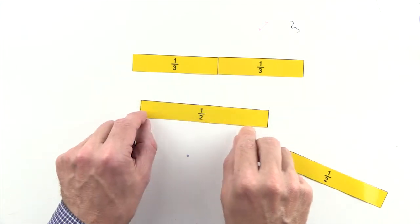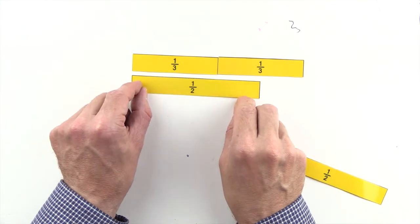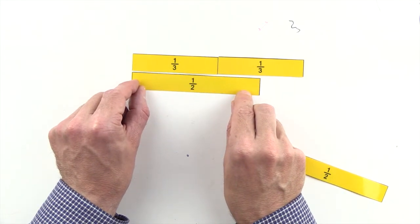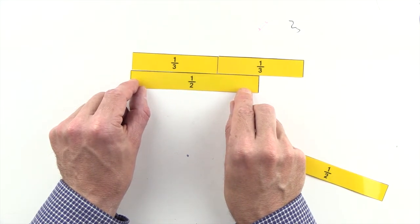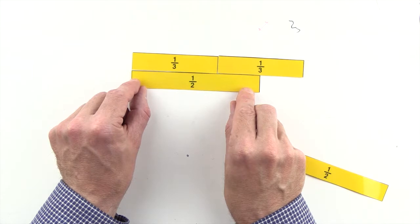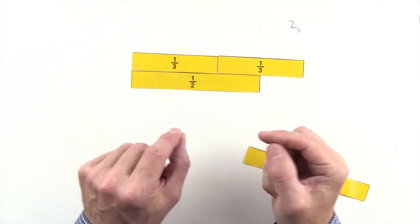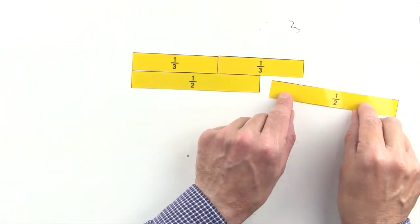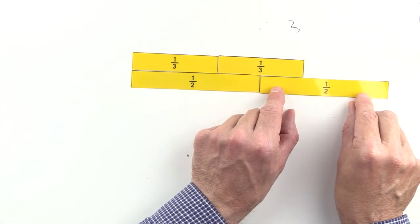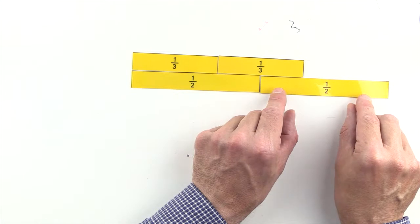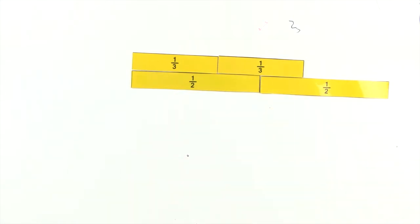1 half is less than 2 thirds, and 2 halves are greater than 2 thirds. So we can't use halves to make an equivalent fraction to 2 thirds.